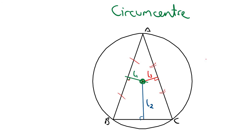How do we find a circumcentre? We know it's a point of intersection between three lines, and we find a point of intersection using simultaneous equations of the lines. So if we know the equation of line L1 and the equation of line L2, then the circumcentre will be the point of intersection of those two lines.